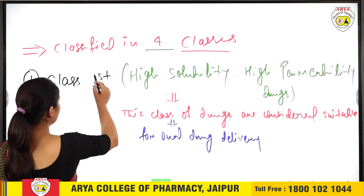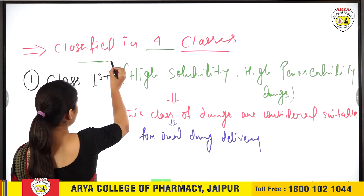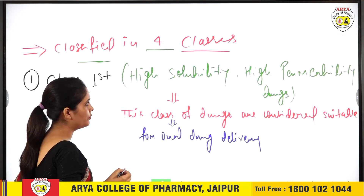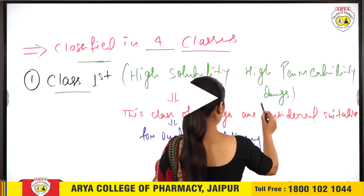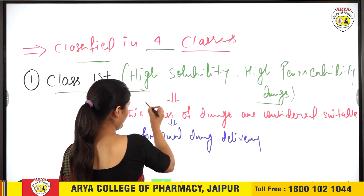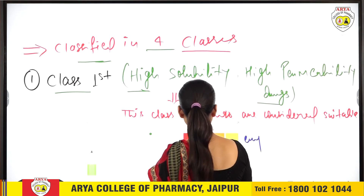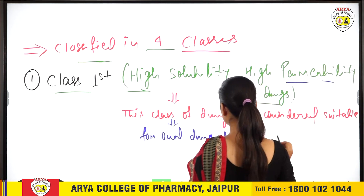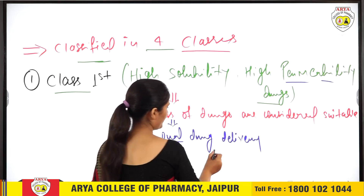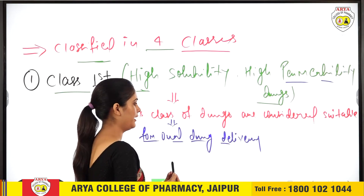Next, classes of BCA system. BCA system is classified into four classes. First class: high solubility, high permeability drugs. अगर हम drug को oral route से देते हैं, तो oral route की solubility भी high होगी और drug की permeability भी high होगी। These class of drugs are considered suitable for oral route, क्योंकि इनकी solubility और permeability basically high है।